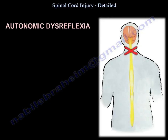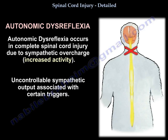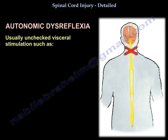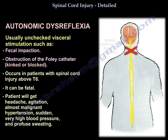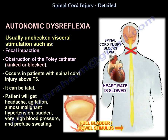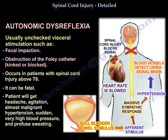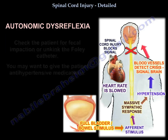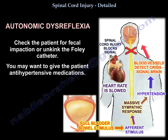Autonomic dysreflexia occurs in incomplete spinal cord injury due to sympathetic overactivity - uncontrollable sympathetic output associated with certain triggers, usually unchecked visceral stimulation like fecal impaction, obstruction, or kinking of the Foley catheter. It occurs in patients with spinal cord injury above T6 and can be fatal. The patient will get headache, agitation, almost malignant hypertension - sudden very high blood pressure and profuse sweating. Check for fecal impaction or unkink the Foley catheter, and give antihypertensive medications.